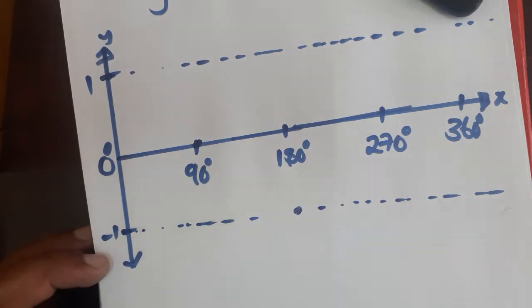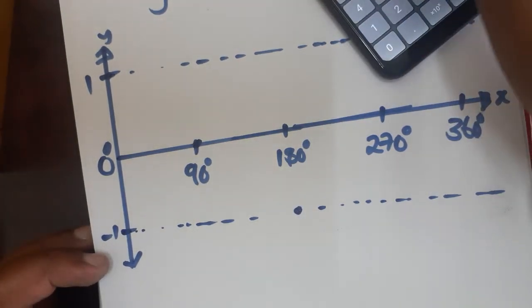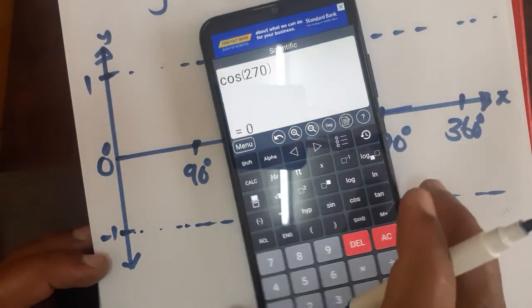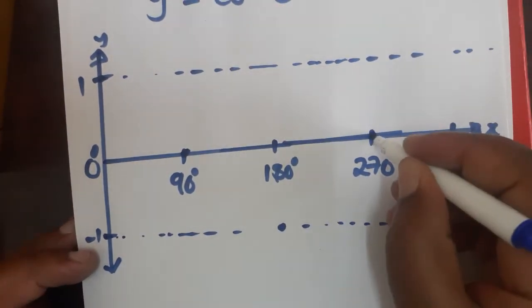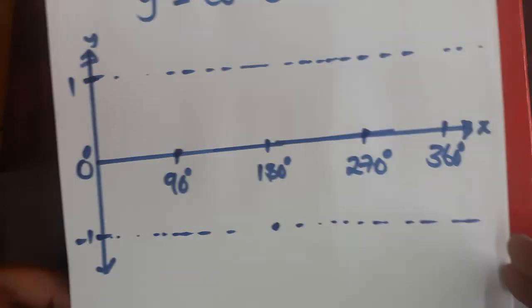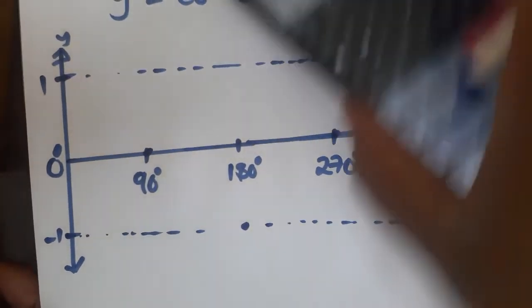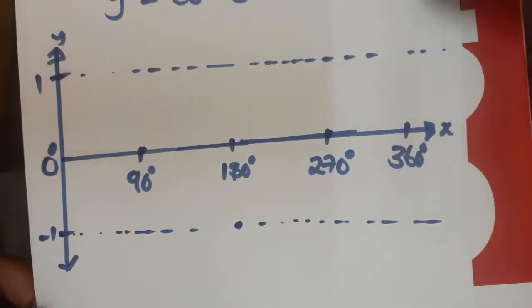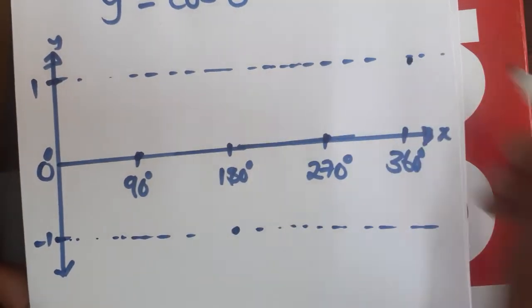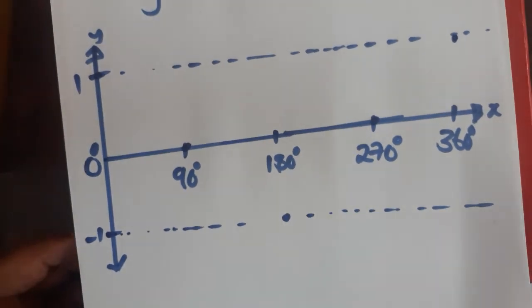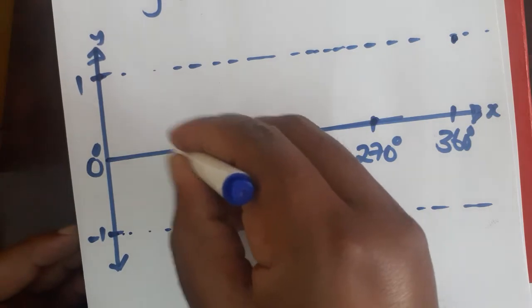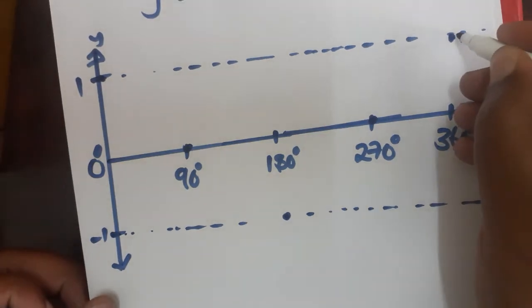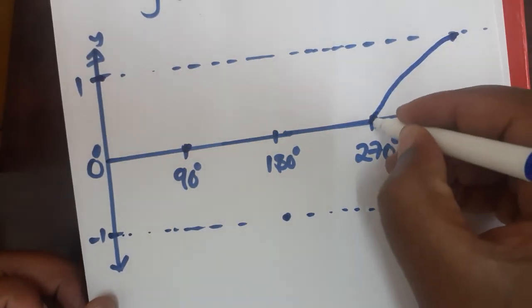Cosine 270 gives you zero — that is the point here. Then cosine 360 gives you one, and our one is here. Take note of the five points we have created — one, two, three, four, five — and we are going to draw the graph through them.